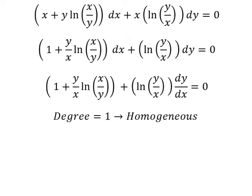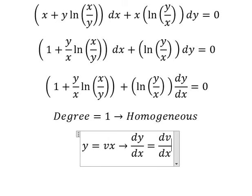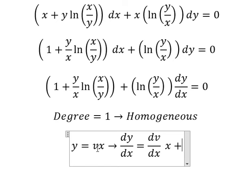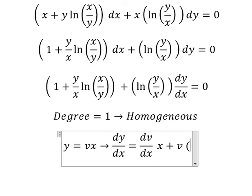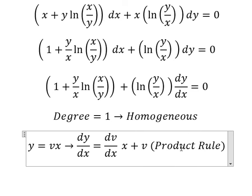So I will put y equals vx. Later we do first derivative for both sides. This one we have dv over dx multiplied by x, this one we have number one. So we have v in here and that is about the product rule of differentiation.